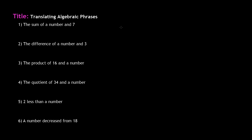Number one says: the sum of a number and seven. The first step is to underline or circle our key terms — that will help us write our algebraic phrase. The three terms that are important here are sum, number, and seven. The first term is sum — we know that sum means addition, so we're going to write the plus sign.